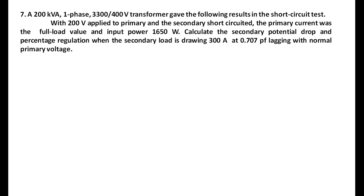When the secondary load is drawing 300 amperes at 0.707 power factor lagging with normal primary voltage. Note the data given. What is asked: calculate the secondary potential drop — the drop due to resistance and reactance — and thereby find out the regulation of the transformer. For 300 amperes load current with power factor 0.707 lagging, what we need to calculate the voltage drop is the equivalent resistance R02 and reactance X02. cosφ is given as 0.707 and sinφ can be calculated from it.